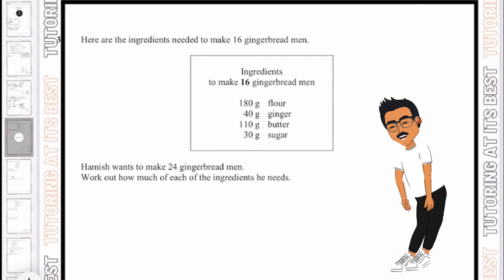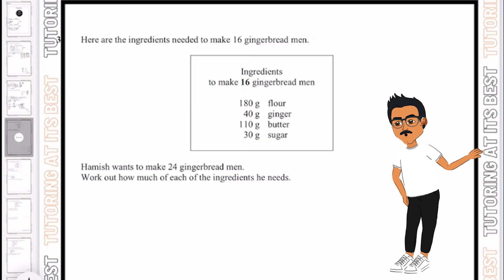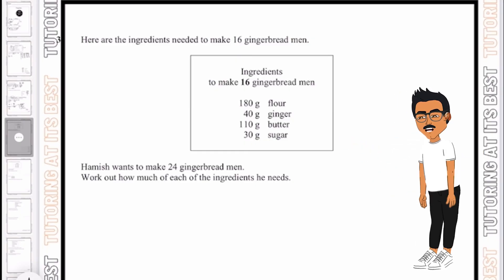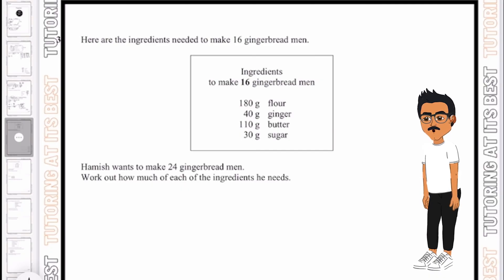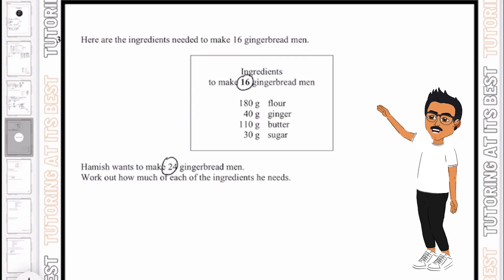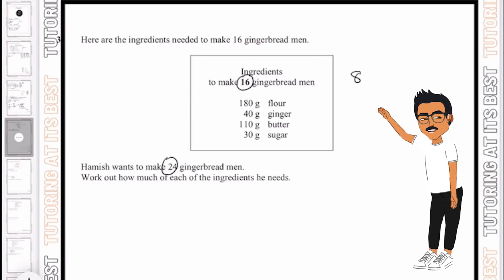Question three. So here are the ingredients to make 16 gingerbread men, and Hamish wants to make 24 gingerbread men. So work out how much of each of the ingredients he needs. So we know that 24 and 16 have 8 in common. So what we can simply do is work out half, which again would be for 8 gingerbread, and then add that on.